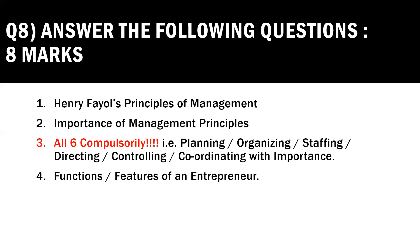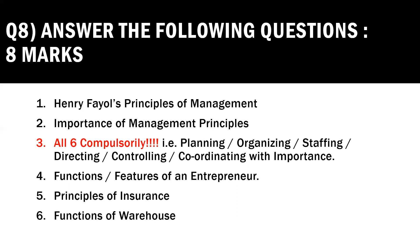The next important question that can come for eight marks is the functions of an entrepreneur and the features or characteristics of an entrepreneur — what qualities are needed to become an entrepreneur versus a businessman. Next, explain the different principles of insurance — your textbook covers several principles such as utmost good faith and principle of indemnity — which you must prepare very well for brief answers worth four or five marks.